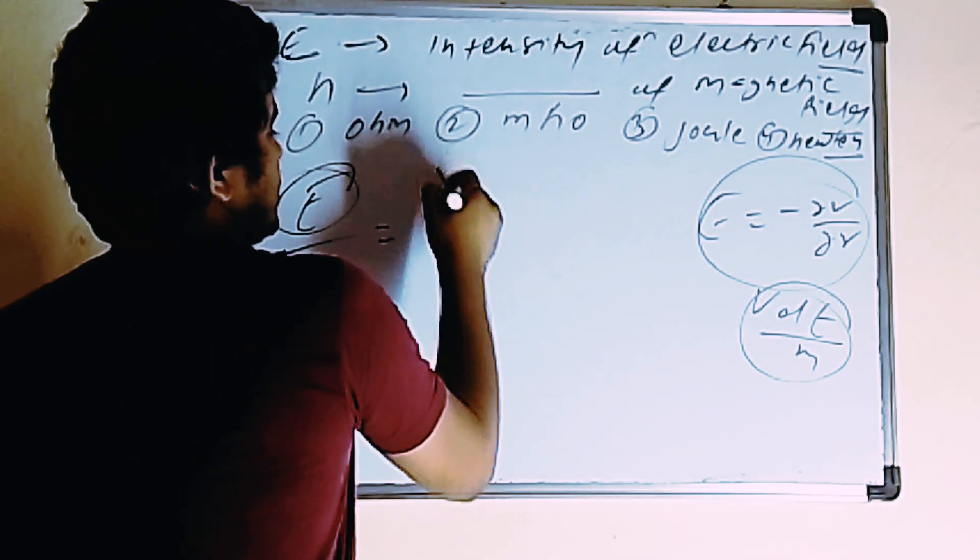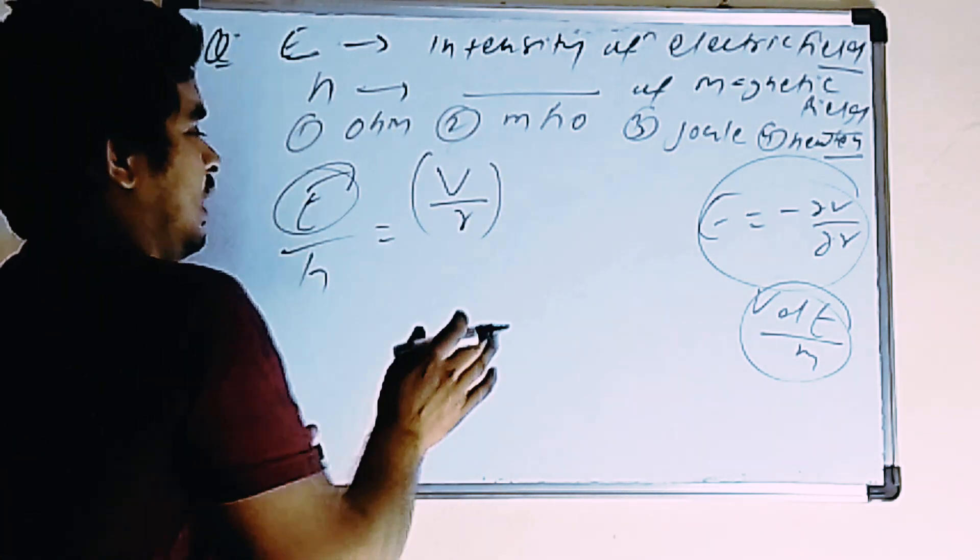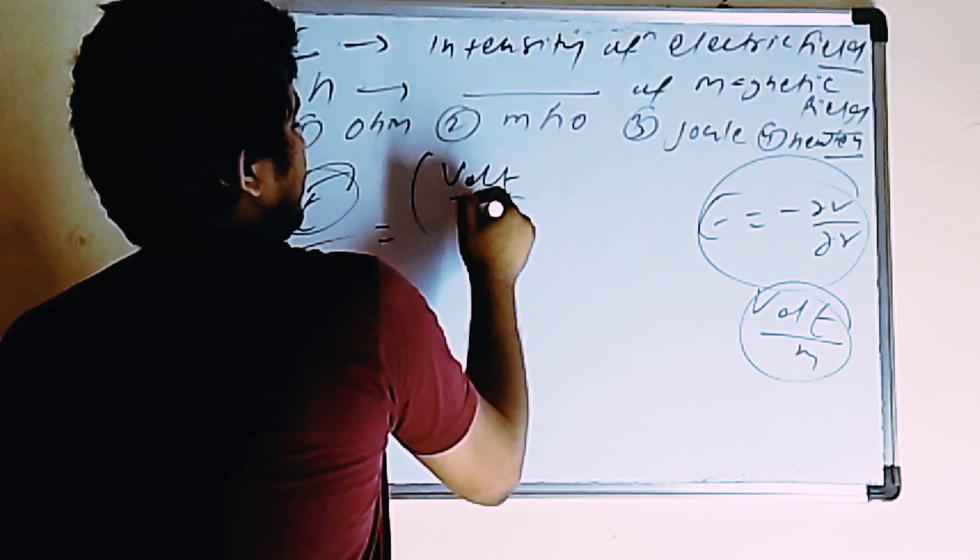So you can say this is E divided by R. Directly, you can write volt per meter. Volt per meter. Agree?